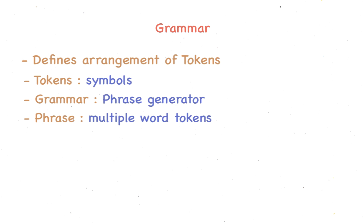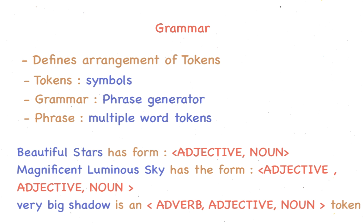We can define a phrase as a sequence of one or more word tokens with the correct part of speech. An example of a phrase would be 'beautiful stars', which is an adjective followed by a noun. Another example would be 'magnificent luminous sky', which is an adjective followed by an adjective followed by a noun. Or 'very big shadow', which is an adverb followed by an adjective followed by a noun.